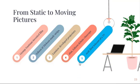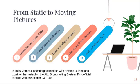Radio and television followed very closely. By 1928, the first telecast of a television program took place, transmitting from the experimental studio of General Electric in New York City. In 1946, James Lindenburg teamed up with Antonio Quirino, and together they established the Alto Broadcasting System. The first official telecast was on October 23, 1953.